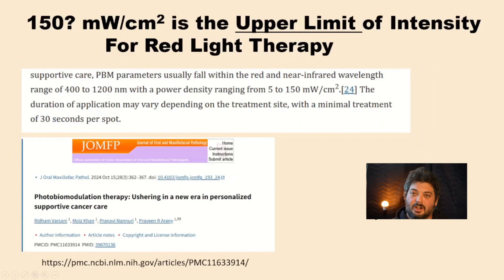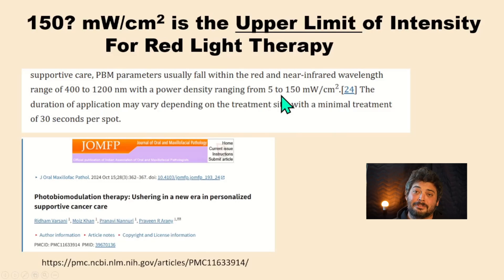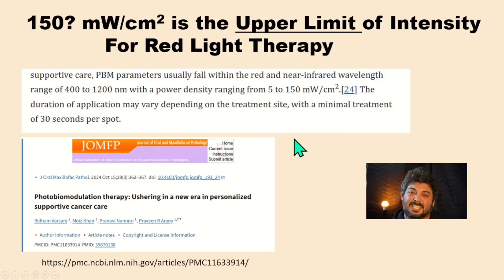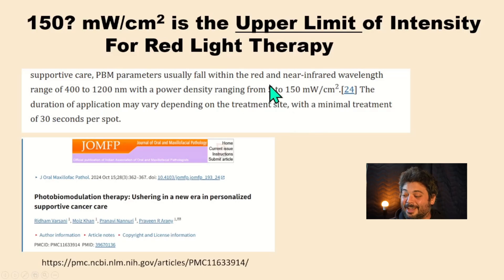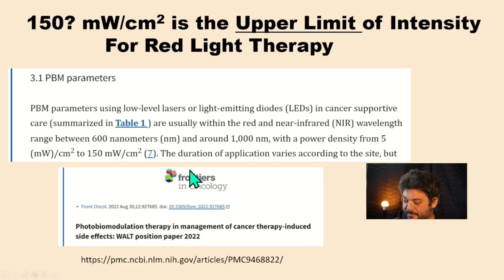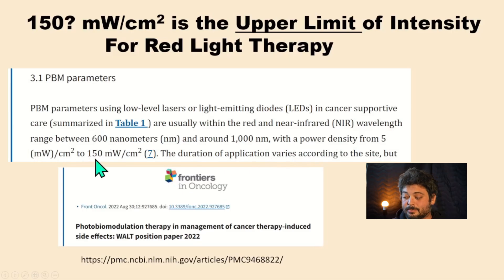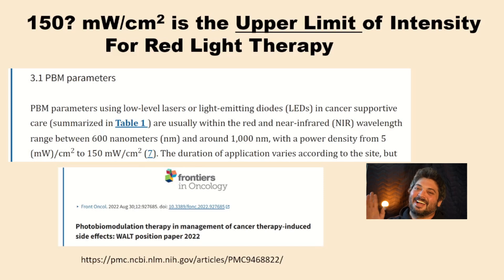To show I'm not cherry-picking: one article gives a range of 5 to 150 milliwatts per centimeter squared. So maybe the limit is 150 — now an influencer would say the best intensity is 149 and definitely not 5 or 6, because how are they supposed to sell products at that? A WALT position paper on cancer-induced side effects also references a power density range of 5 to 150 milliwatts per centimeter squared. I was trained as an engineer to be very conservative with safety ranges — if someone gives me a range like that, I'm going to start at the lowest possible and see if that works.